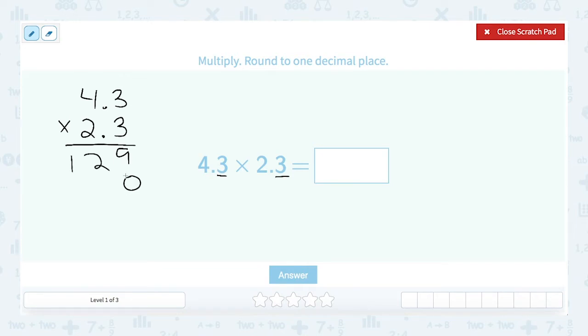I put in a placeholder. 2 times 3 is 6. 2 times 4 is 8. And now I add to get 9, 8, and 9.